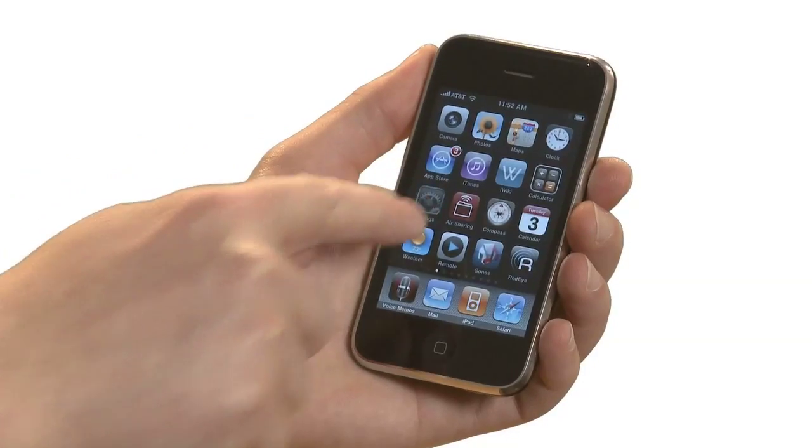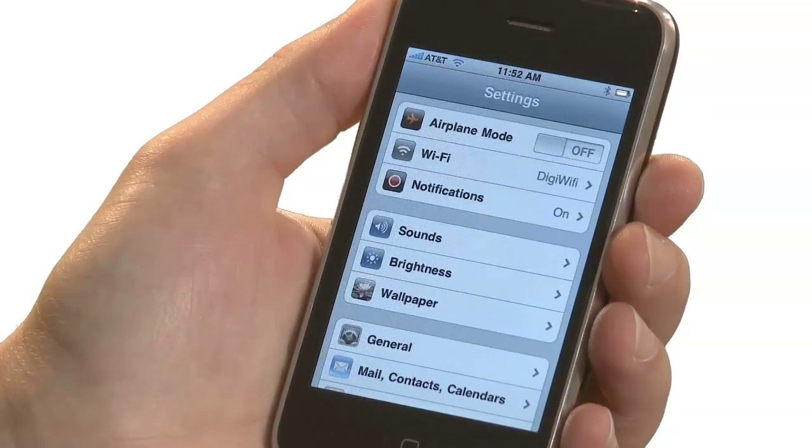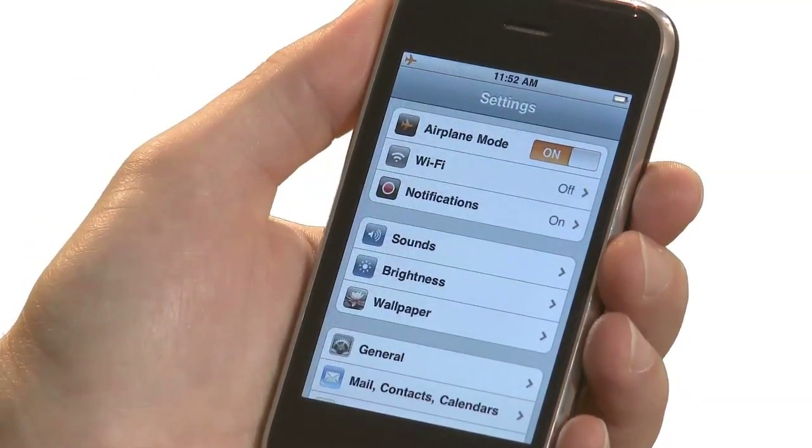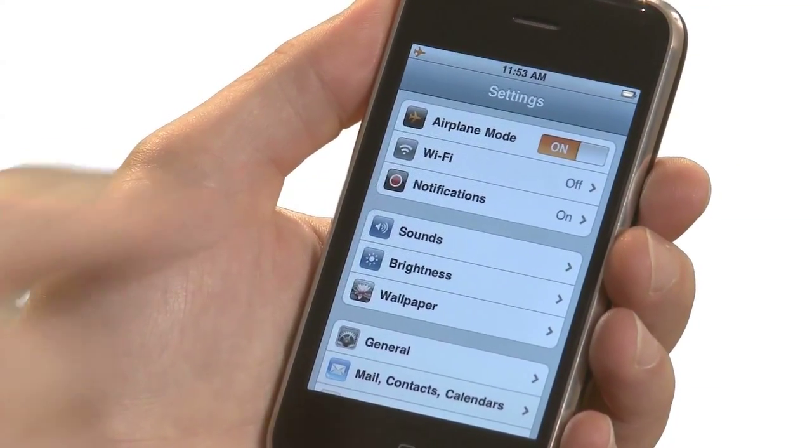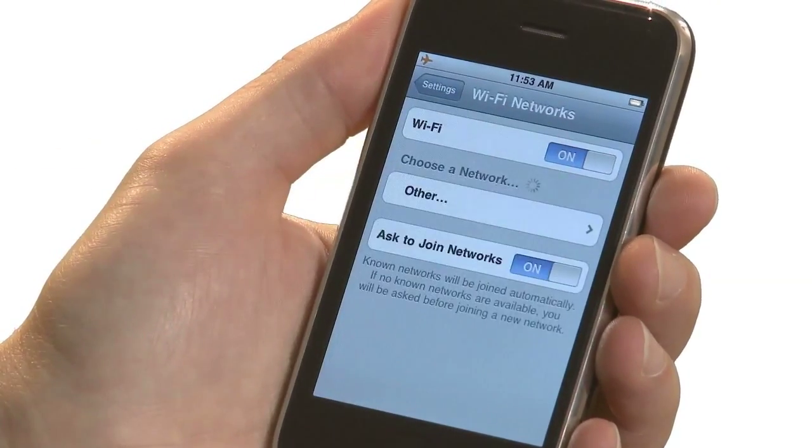To access the RedEye network, open the Settings application. During this setup phase, iPhone users running OS 3.0 or later will want to turn on Airplane mode to prevent the iPhone from jumping over to the cell network. Tap on the Wi-Fi row and ensure that Wi-Fi is on. Select the RedEye network from the list.